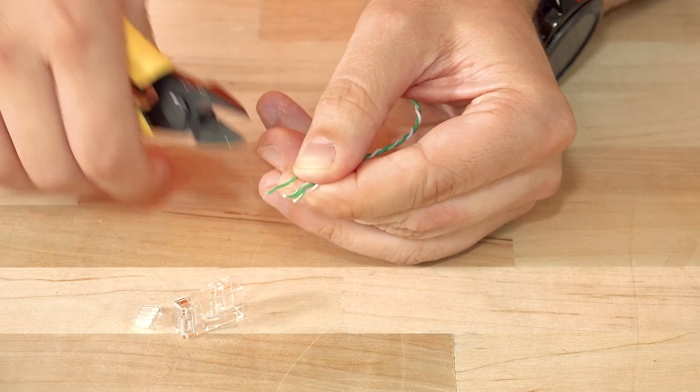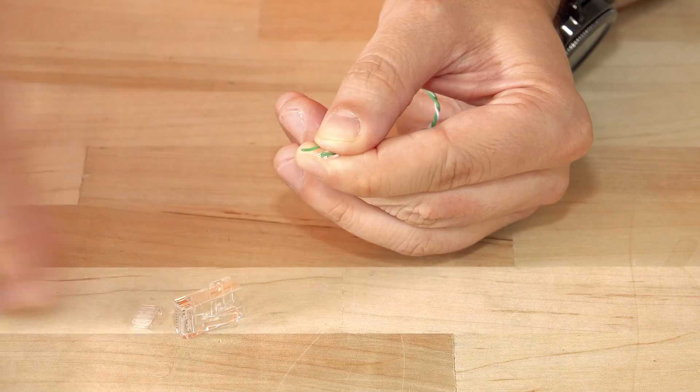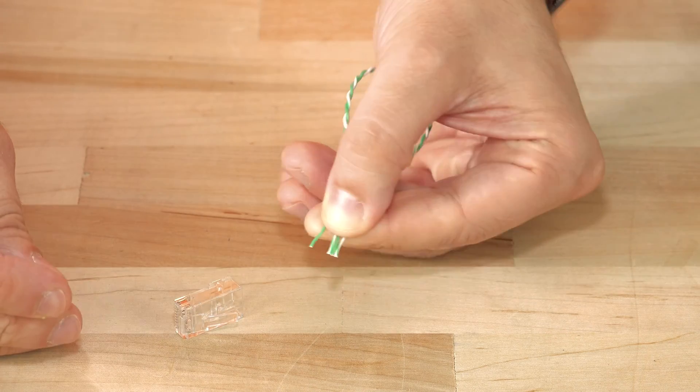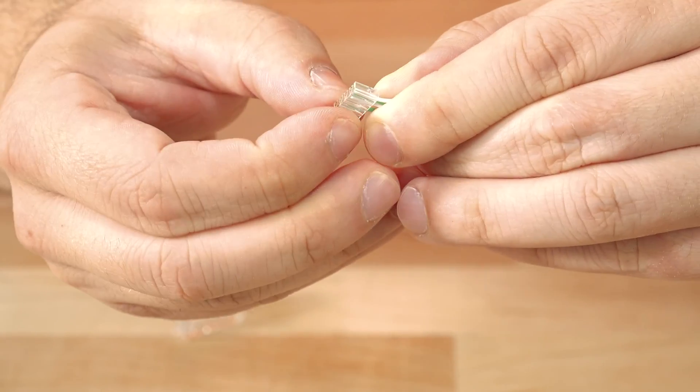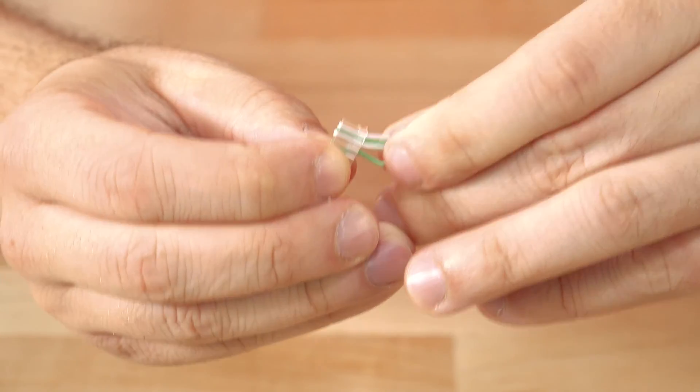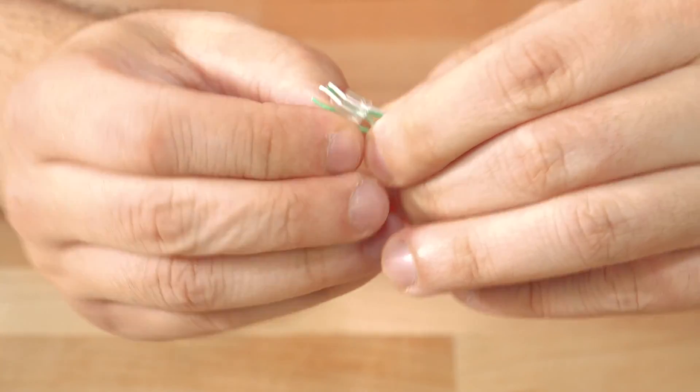So what we're going to do is trim these down a little bit. Grab your load bar, we're going to load this in. Pins 1, 2, and 3 should go in fairly simply. Pin 6 might be a little difficult, but you'll be able to put that in by itself.